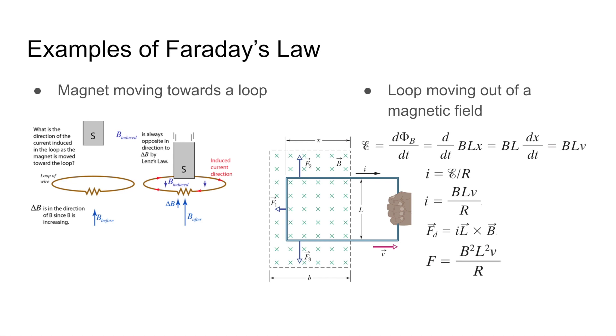Here's an example where you actually have the calculations of each of these. So when we have a rectangular loop and we're pulling it out of a magnetic field, the EMF is simply the change in flux over the change in time. And that can be expressed as BL